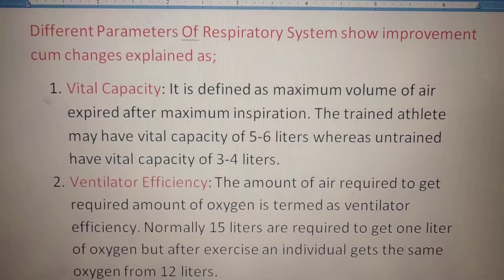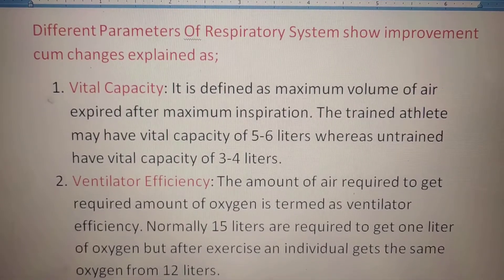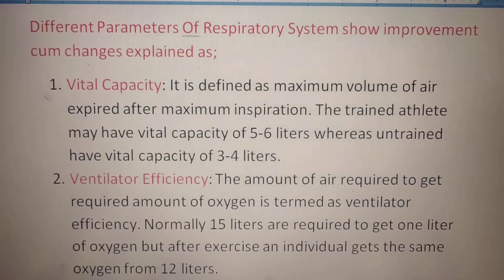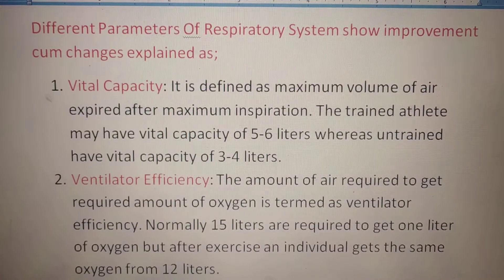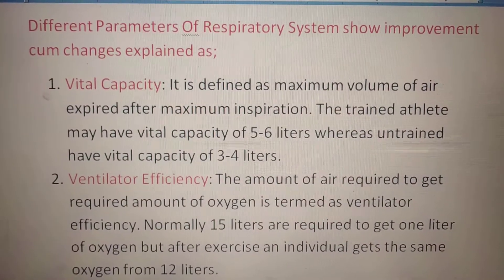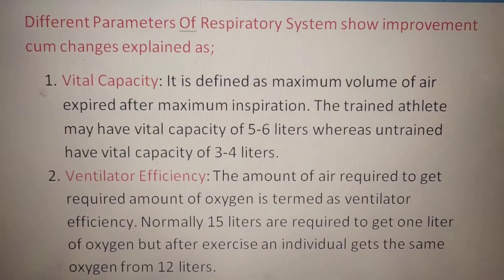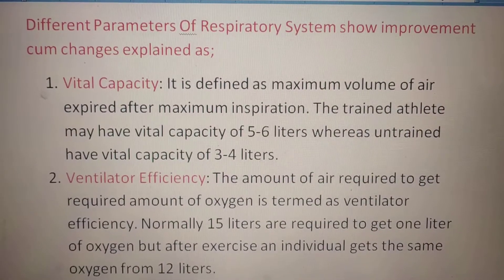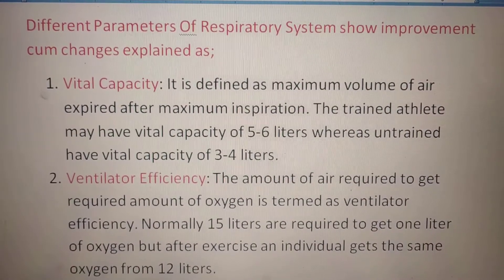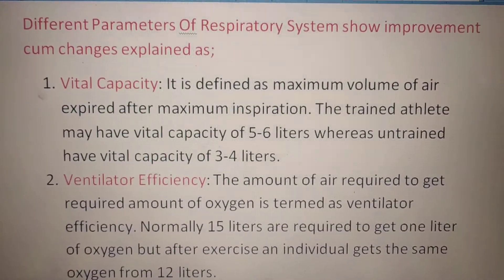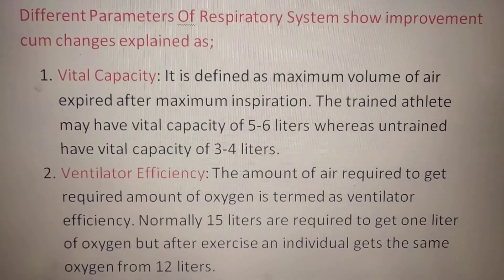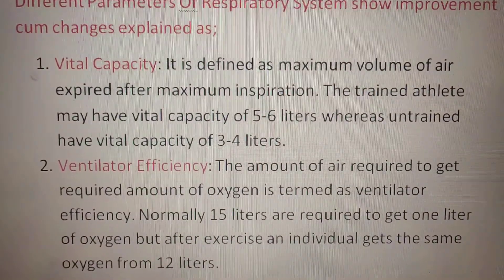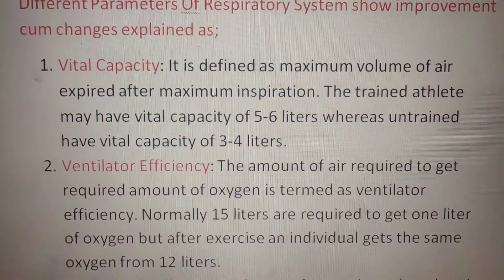Different parameters of the respiratory system show improvement with exercise. The first is vital capacity, which is defined as the maximum volume of air expelled after maximum inspiration. A trained athlete may have a vital capacity of five to six liters, whereas an untrained individual has a vital capacity of three to four liters.